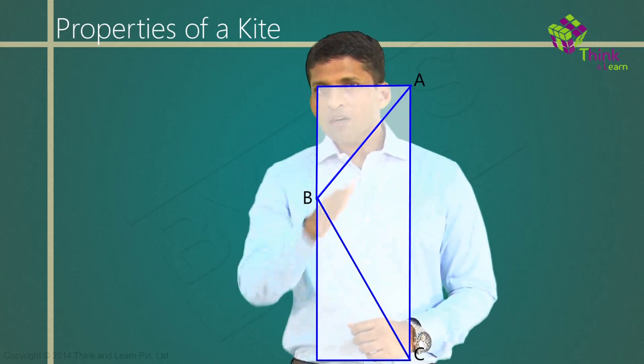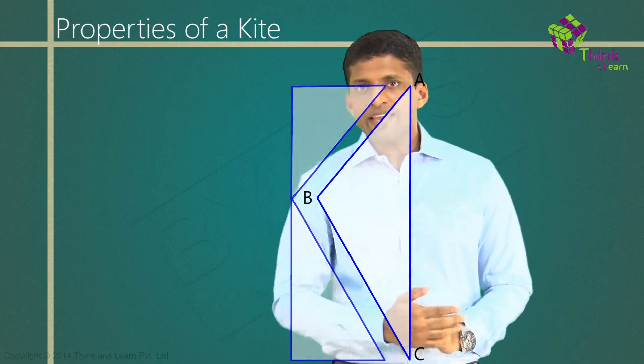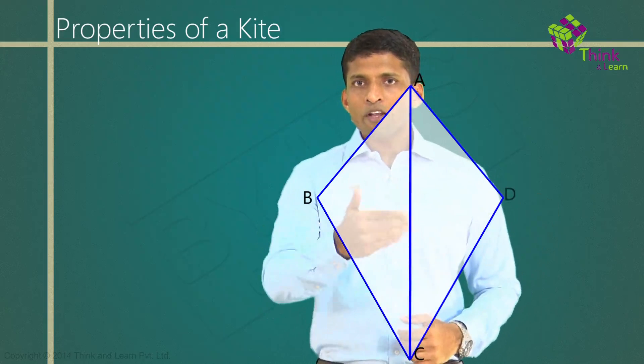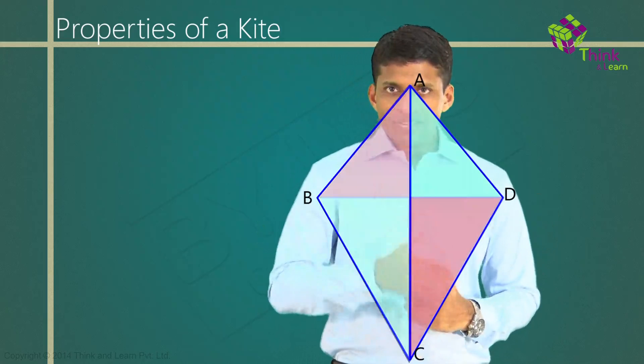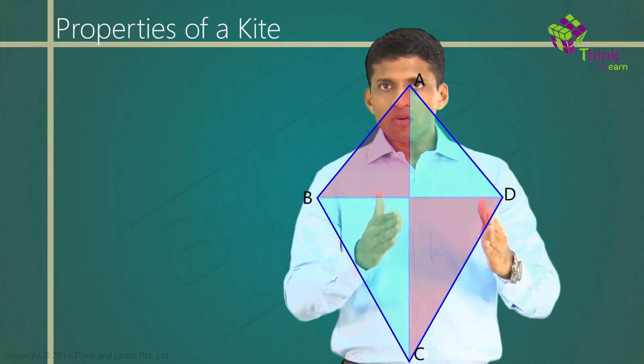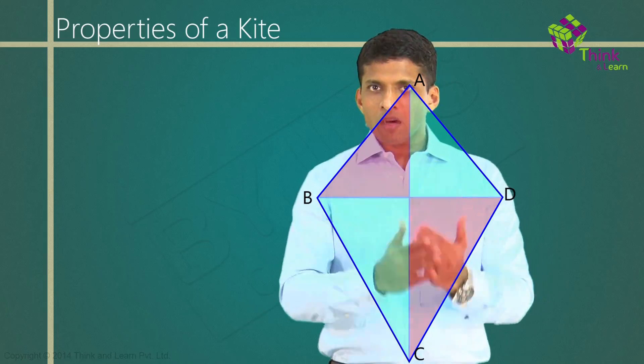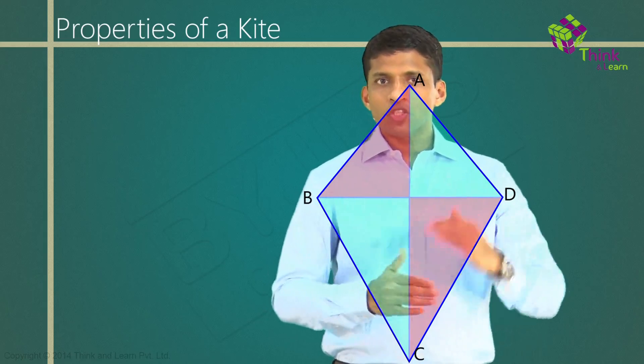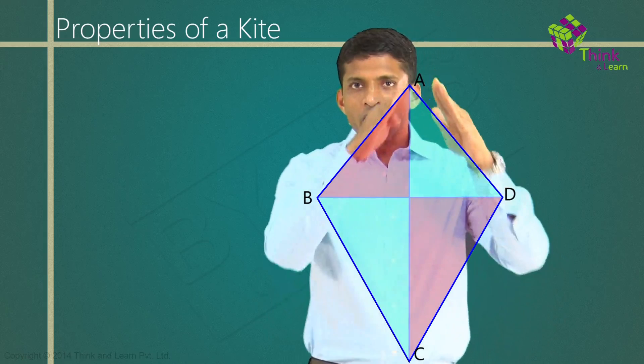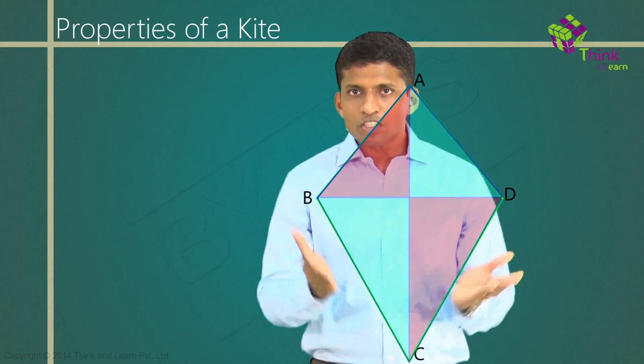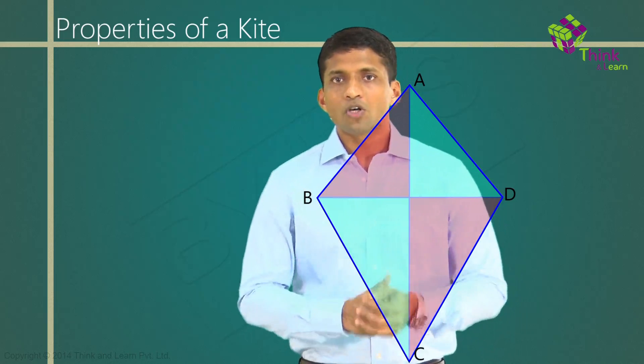Now, cut the paper along these lines and then open it up. What you are getting is nothing but a kite because now you will get a sheet of paper if you cut like this, which is where these two sides are equal, that is, AB and AD, and these two sides are equal, that is, BC and CD.